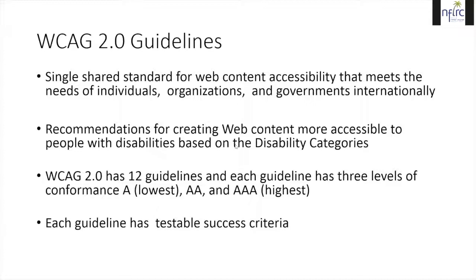WebAIM has extracted the guidelines and provided a great checklist with WCAG 2.0. They can be used when creating and checking for accessibility. Please take time to look at the WCAG 2.0 checklist in detail. It has 12 guidelines and each guideline has three levels of conformance: A, double A, and triple A, with A the lowest and triple A the highest. For each guideline, there is success criteria and a list of tests and information that can help you. These guidelines will also make your web content more usable to all users.